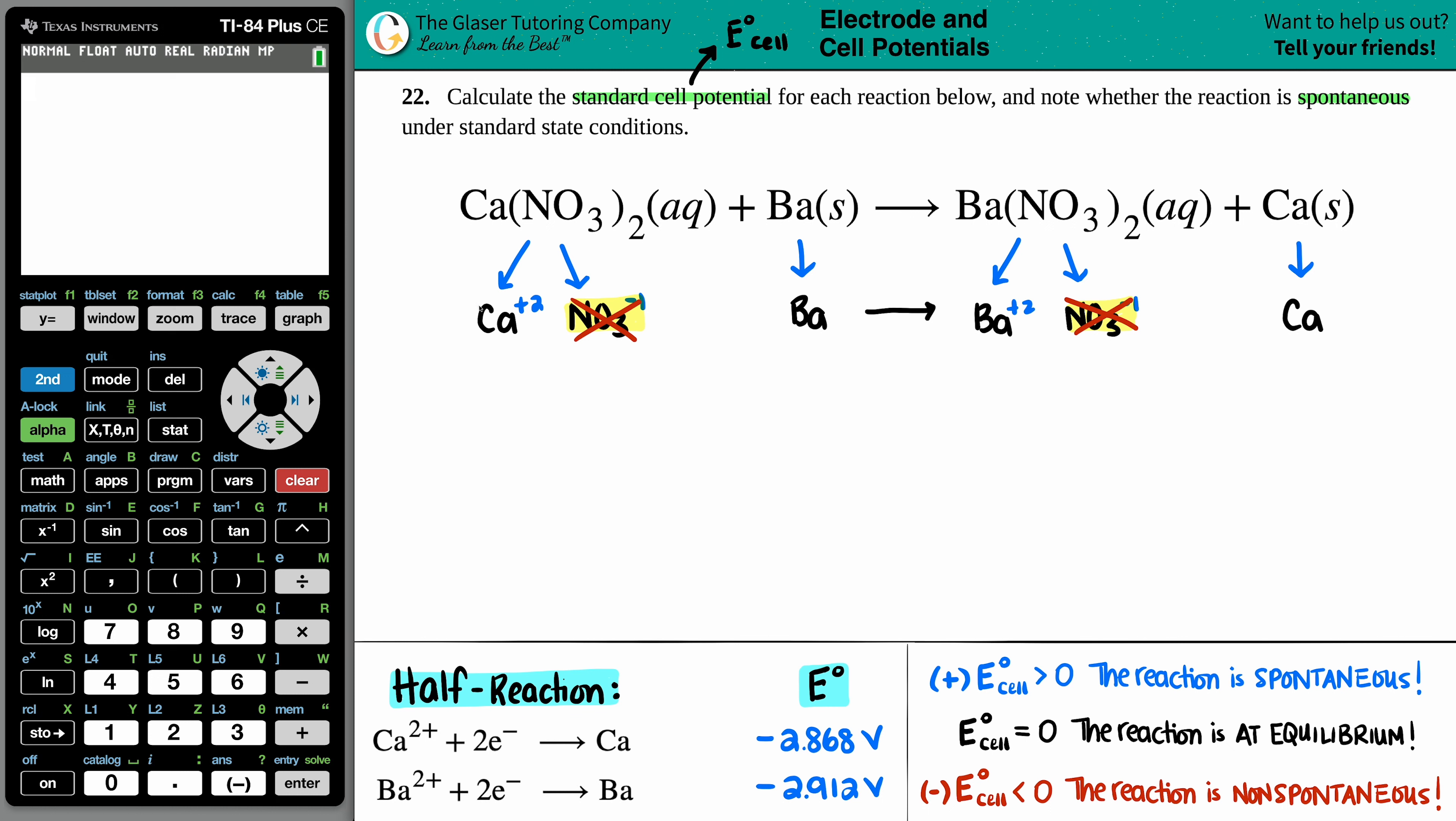But now if I see the calcium was a plus two, and then it turned into just a calcium. Remember, if they give you an element that has no charge in the upper right-hand corner, that means that it's a zero charge. So this was a change in the charge. It went from a plus two to a zero.